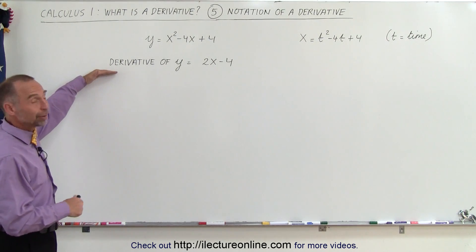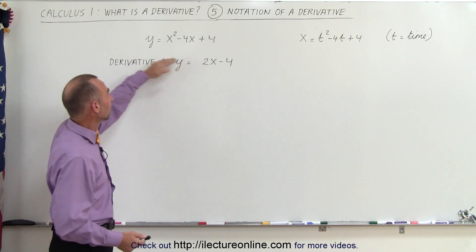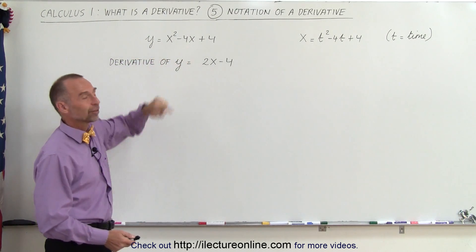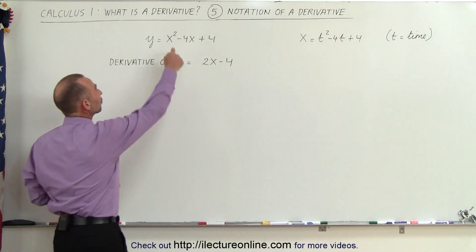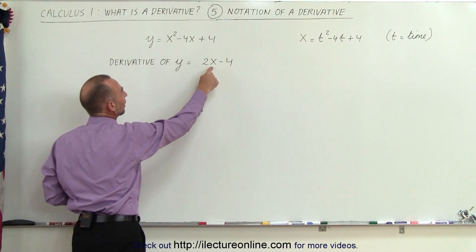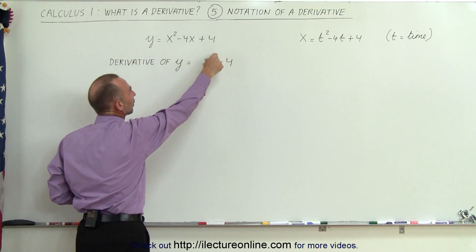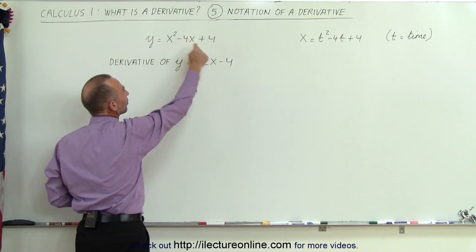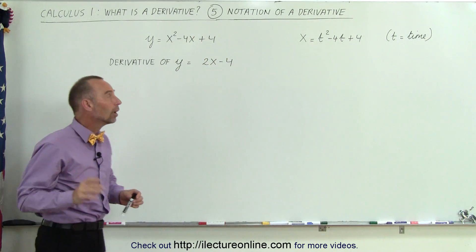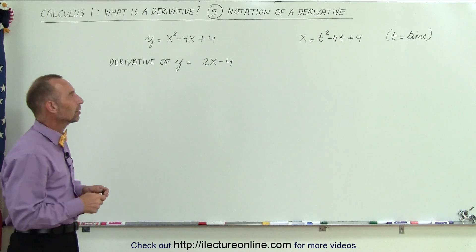So far we've been simply writing it out: the derivative of y is equal to 2x minus 4, if the original function is y equals x squared minus 4x plus 4. We take the exponent, put it in front, multiply times the coefficients — 2 times 1 times x to the exponent minus 1, so 2 minus 1 is 1. Then we take the 1 in front, get minus 4, x to the 0, and x to the 0 is 1, so the derivative is simply 2x minus 4.